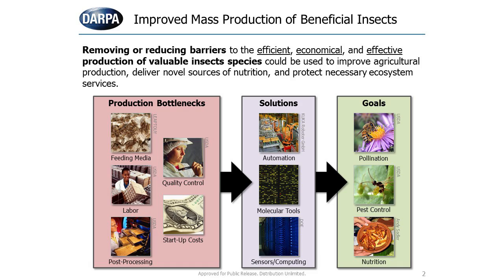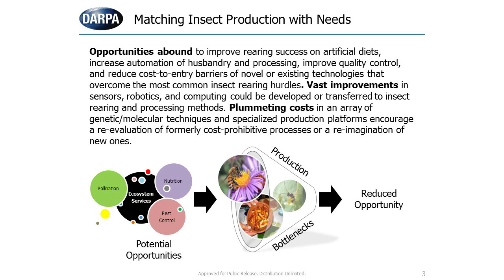I would like to lower the entry cost into the market of insect production for mass systems. The solutions that we foresee would come from several different areas: it might be automation of the process of delivering insects, it might be molecular tools that down-regulate pathogen genes or improve the insects in some way, and then also sensing and computing — can you take that automation to the next step and develop sensors that might allow you to better control the environmental conditions within insect rearing systems?